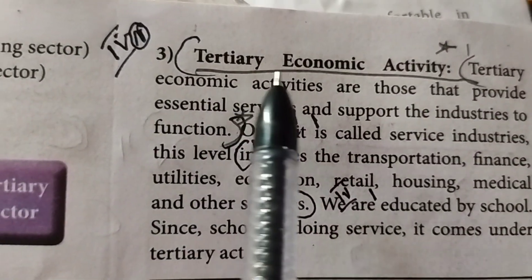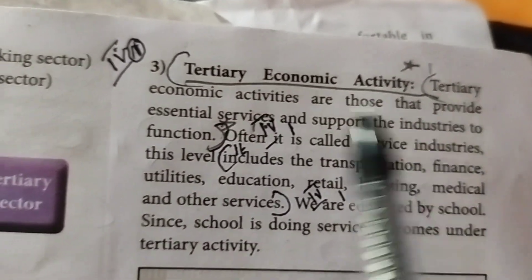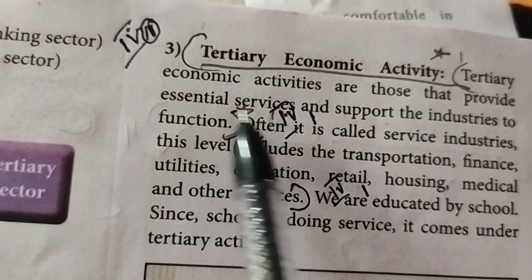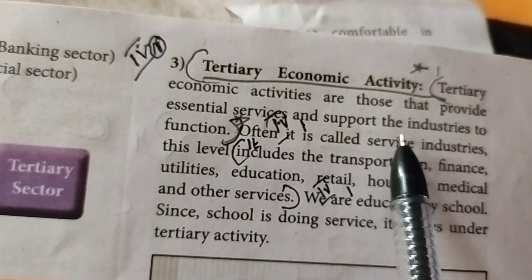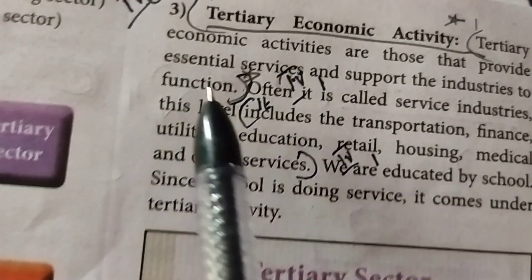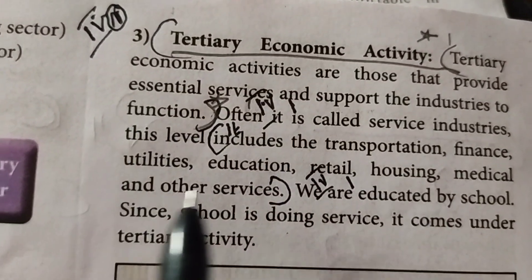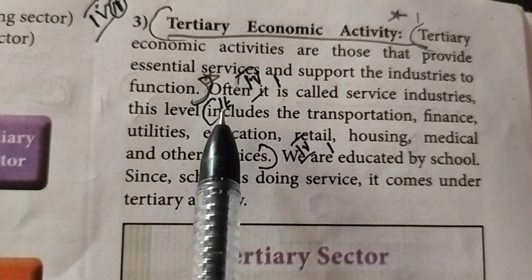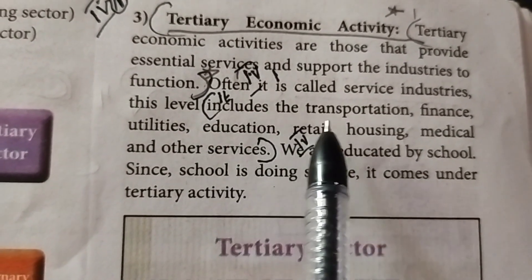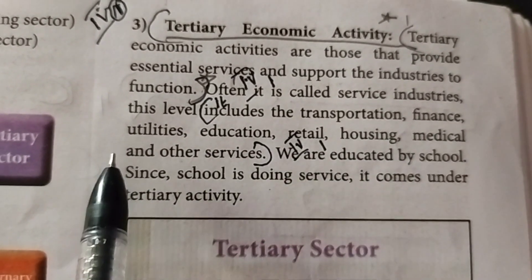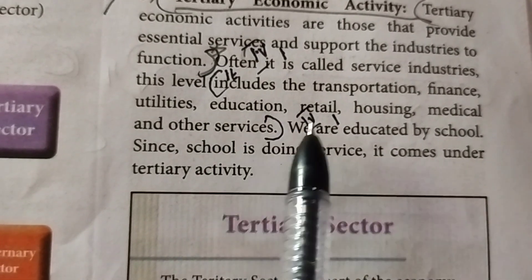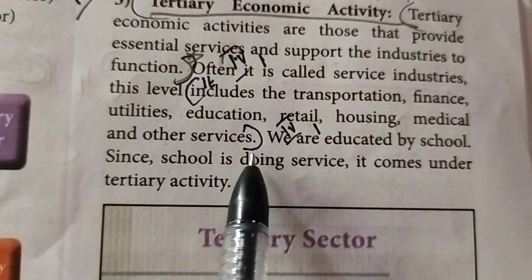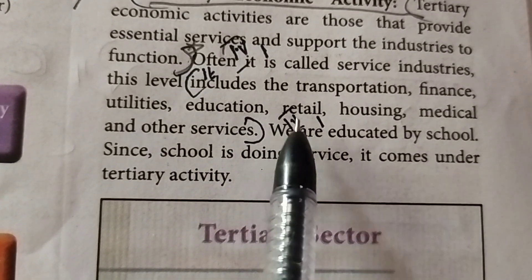Tertiary economic activities are those that provide essential services and support industries to function. They include transportation, finance, utilities, education, retail, housing, medical and other services.